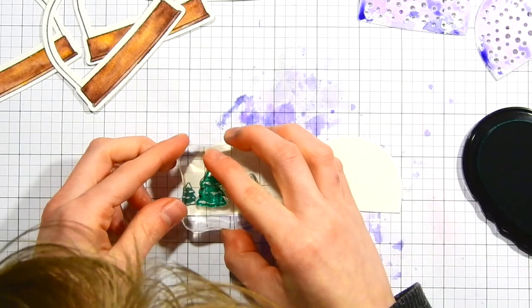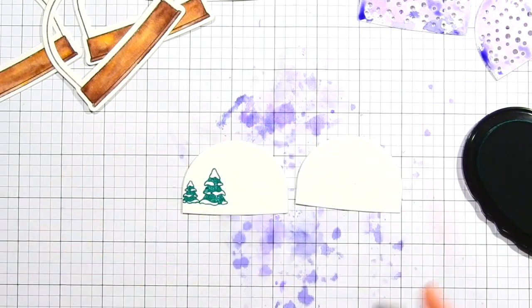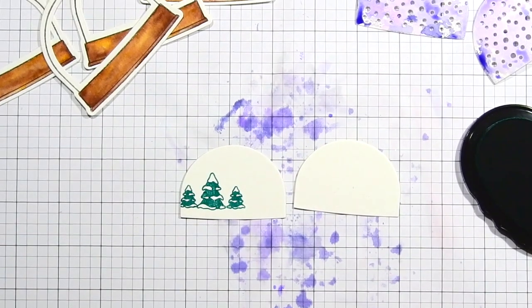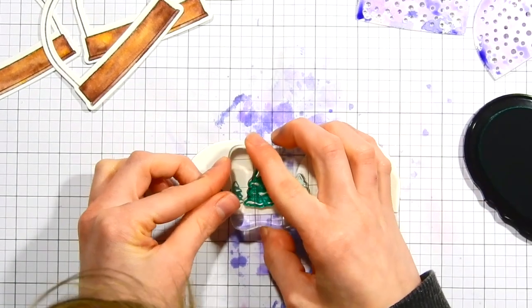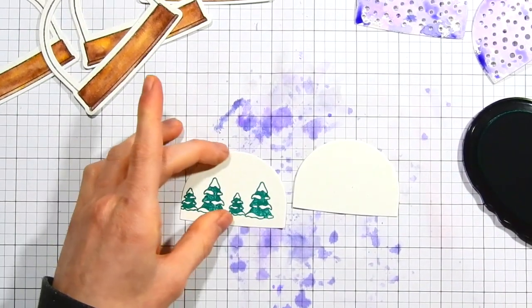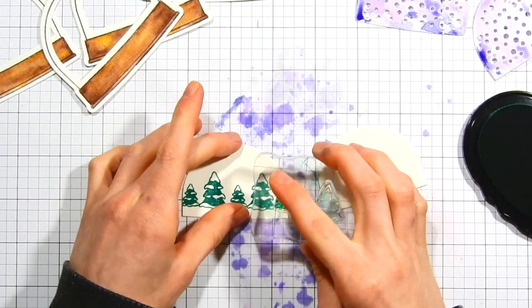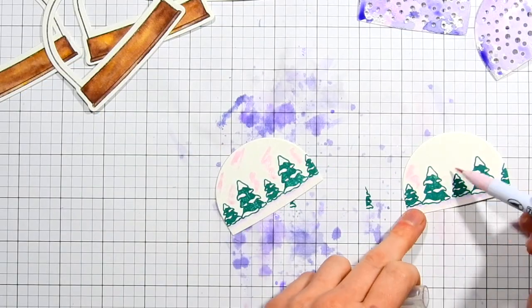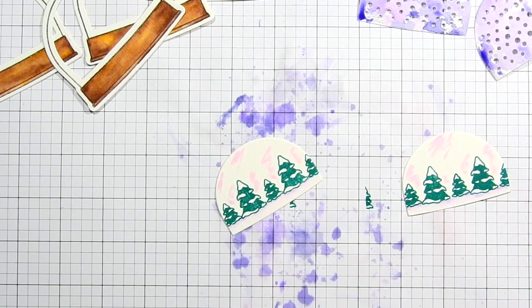Now on some of these snow globes I'm going to be using the plain background which I'm adding some of the little trees from the Lawn Fawn Ready Set Snow Stamp Set. I'm stamping these in some emerald ink from Altenew but then on the background of two other snow globes I'm actually going to be using that snowy background and I watercolored that with the same colors that I'm using here for the flat background.